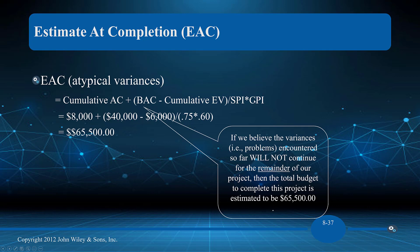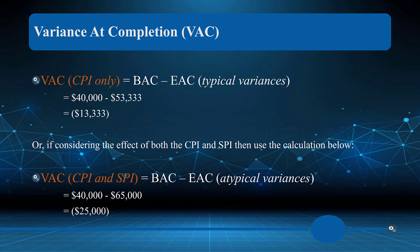For an atypical variance EAC, we divide by both the SPI and CPI together. Our CPI gives us 0.75 cents of value per dollar spent, while our SPI gives us 0.60 cents. Using the atypical formula, the project could end up at upwards of sixty-five thousand five hundred dollars. The variance at completion (VAC) shows we're thirteen thousand three hundred over using CPI alone, and twenty-five thousand over when combining CPI and SPI.